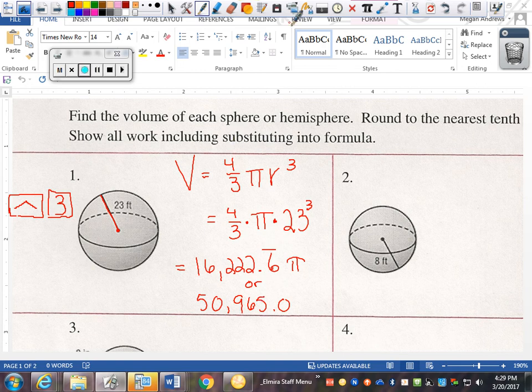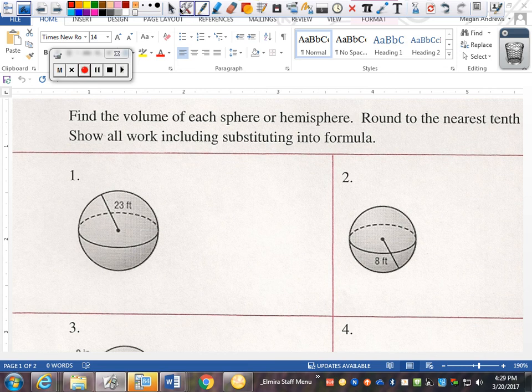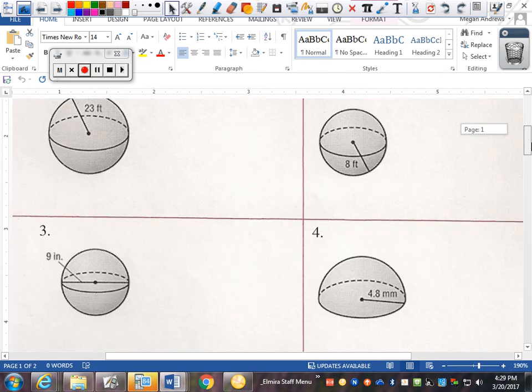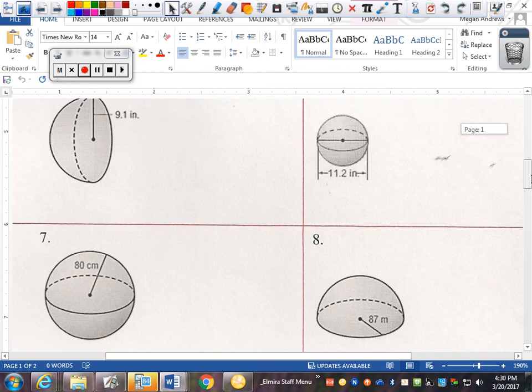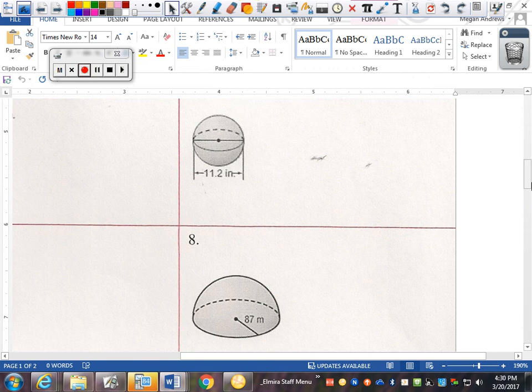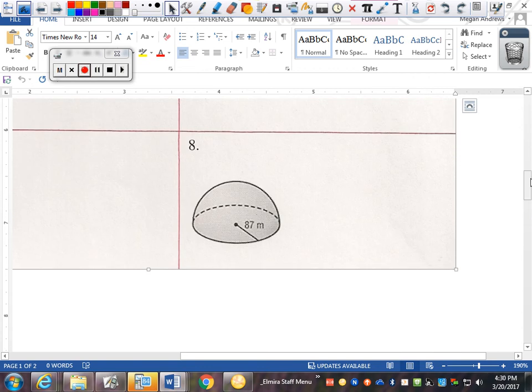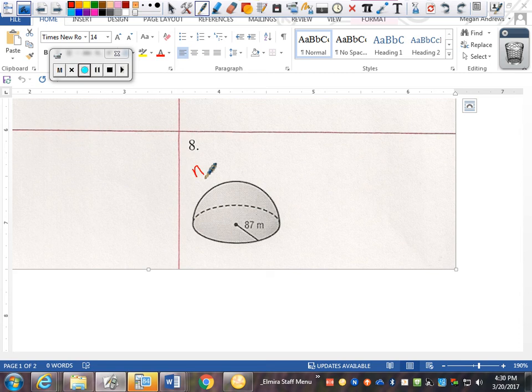Now, there's a few drawings on the sphere homework that look a little bit different. Let's do number eight. So, number eight is what's called a hemisphere. Hemisphere. A half of a sphere. A couple different ways you could do this. A half of a sphere would mean I could find the volume and divide by two. So, volume. I could just do the volume like I normally do. Four-thirds pi r cubed.